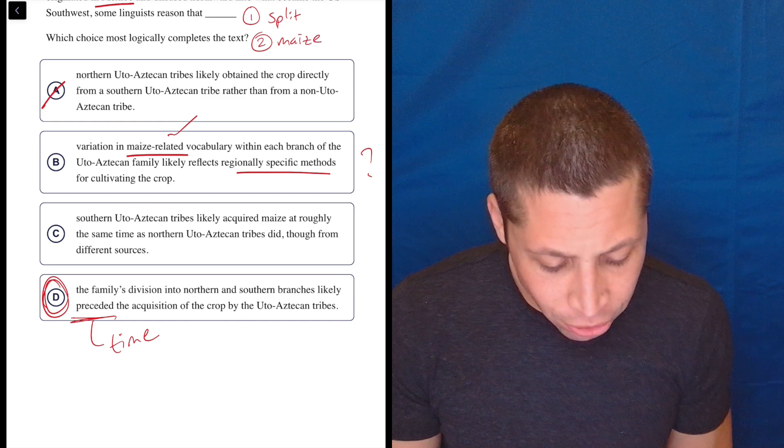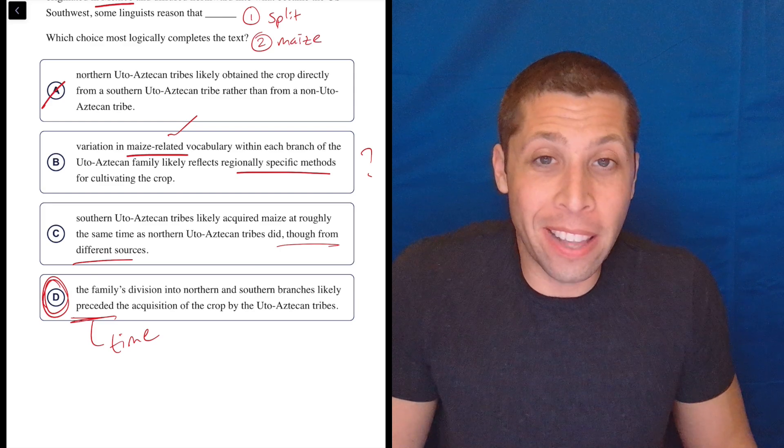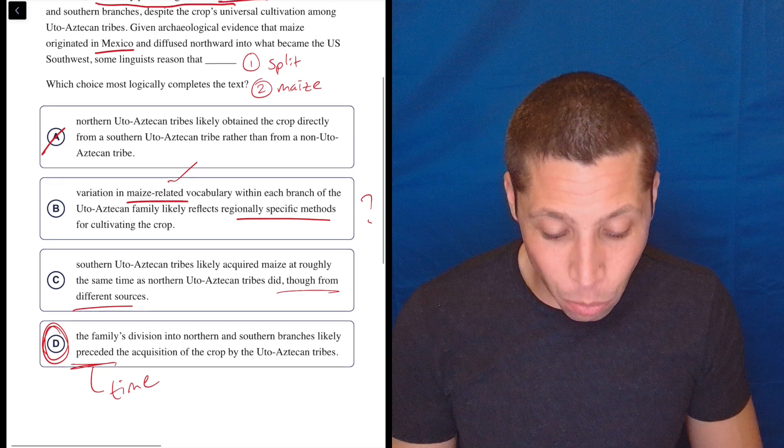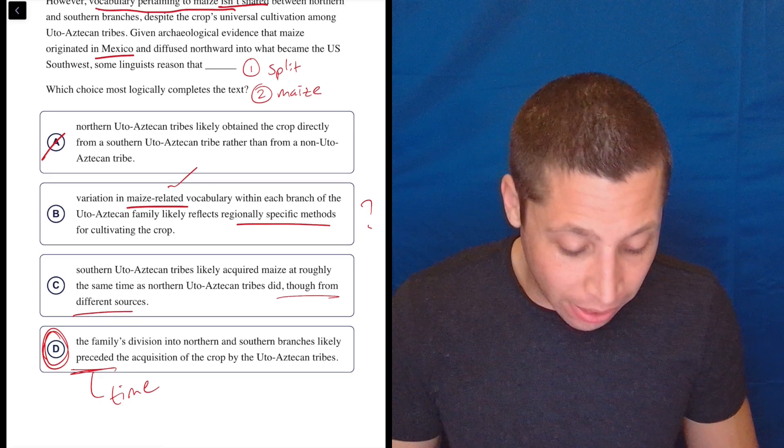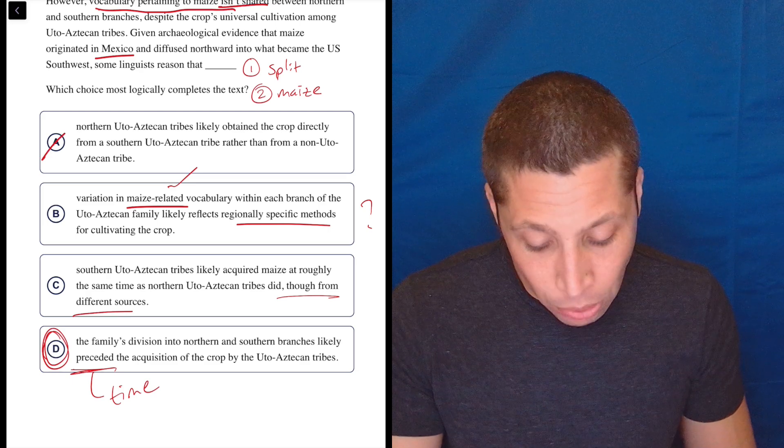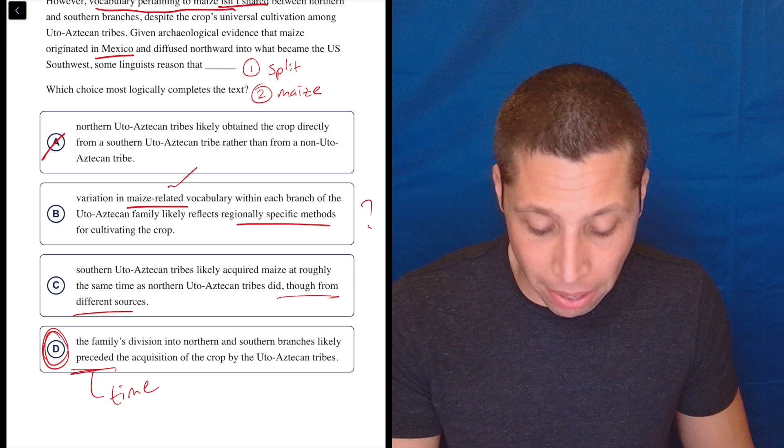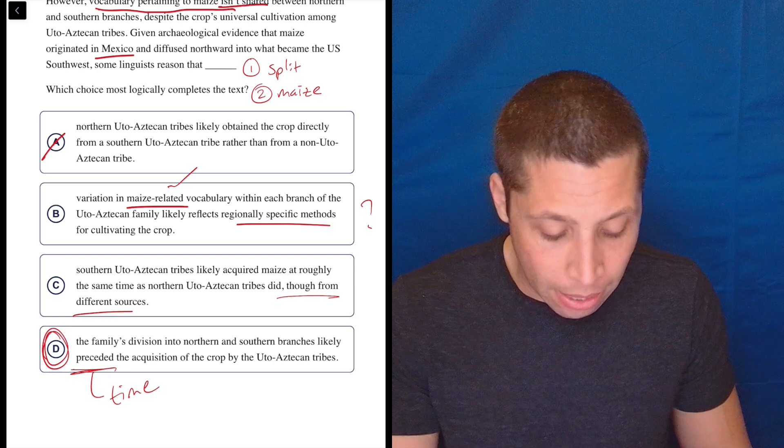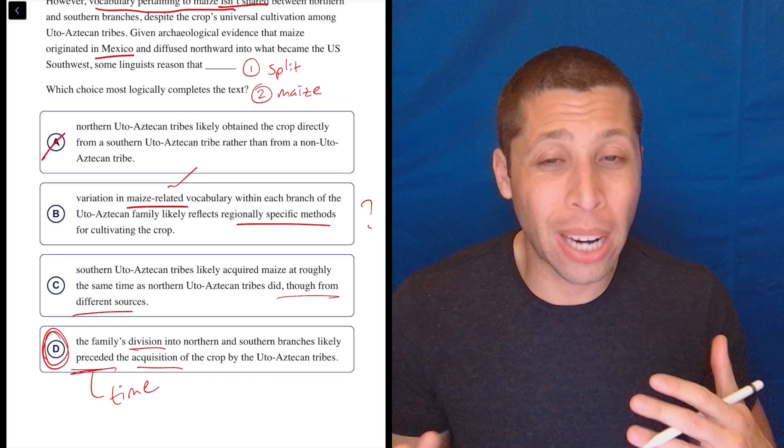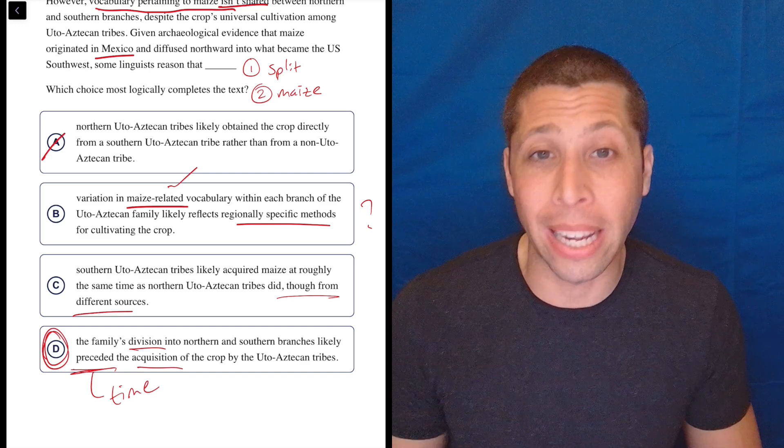That's why it's literally saying which choice most logically completes the text. You don't want to have to have so many assumptions behind your answer that suddenly we're not even using real logic anymore. So, with C, I just, if they said they're from different sources, maybe just give me that they got the word from those. Those different sources had a different word as well. Explain that. Explain why that's different. So, I don't feel like that's missing a piece that could have easily made C the right answer. And then, again, going back to B, regionally specific methods, maybe, like, do we know that they have different regionally specific methods for cultivating it? I don't know. They don't really talk about that.